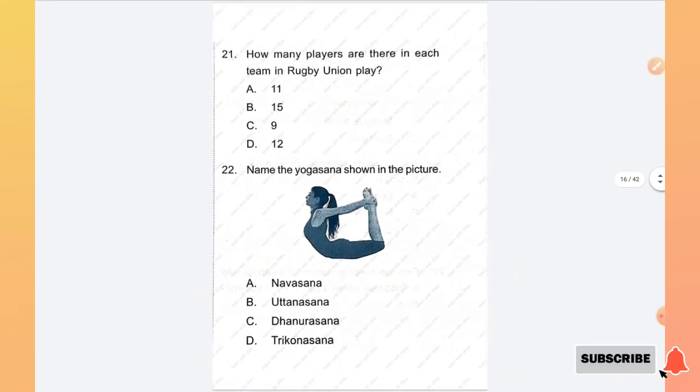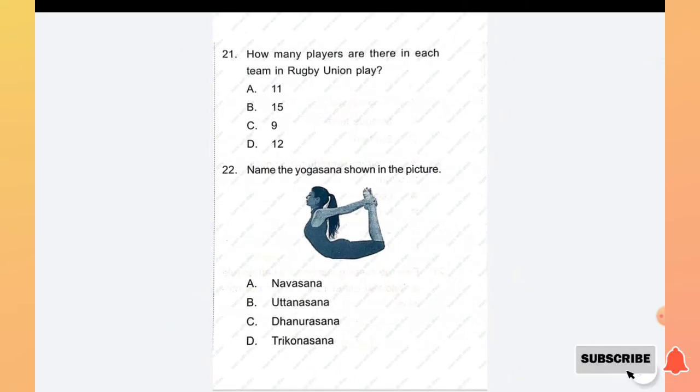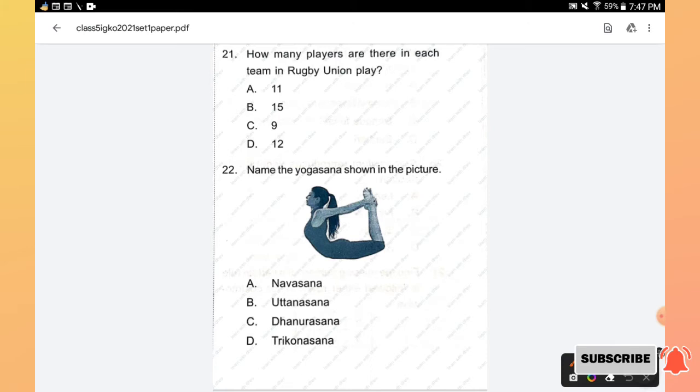Question number 21: How many players are there in each team in rugby union play? Options are 11, 15, 9, 12. The right answer is option B, 15.